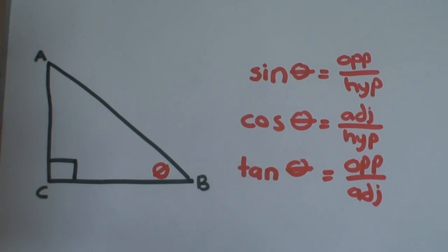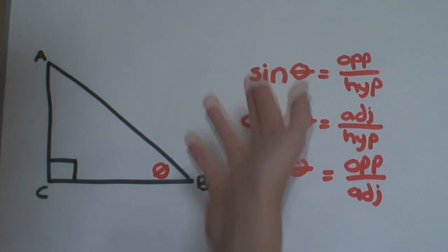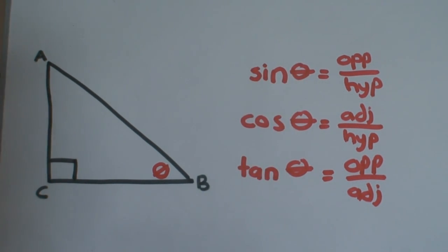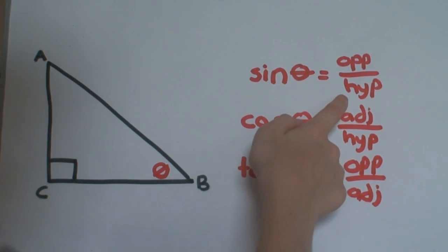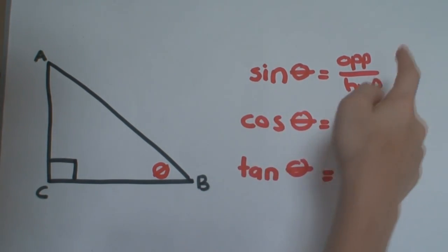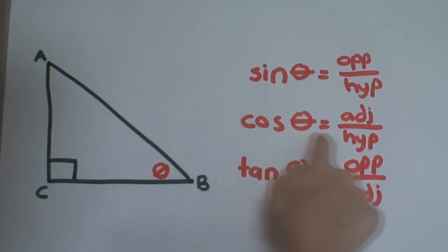This means, if you know the measure of one side, you can use these ratios to find the length of any other side in the triangle. For example, if you know the measure of the hypotenuse, you can find out the measure of the opposite side using this function or the measure of the adjacent side using this function.